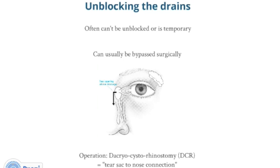Can the tear drains be unblocked? The short answer is usually not, but if so it's only temporarily. However, the blockage can often be bypassed surgically. The most common bypass operation is called a dacryocystorhinostomy, or DCR, which means tear sac to nose connection.